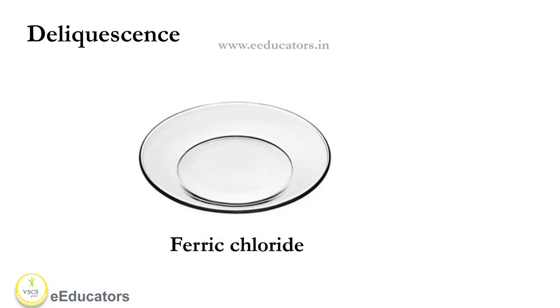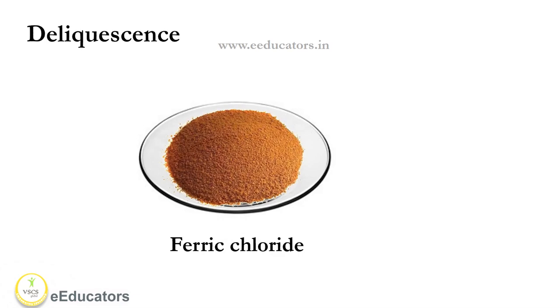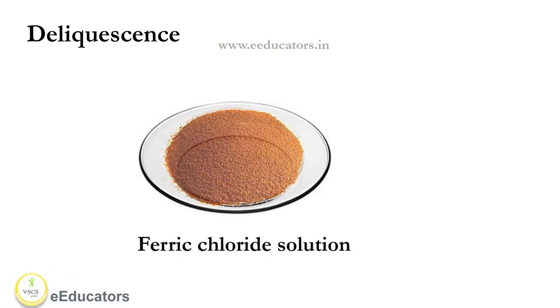If we take ferric chloride on a glass plate and allow it to sit for some time, it absorbs water from the atmosphere and becomes a ferric chloride solution.